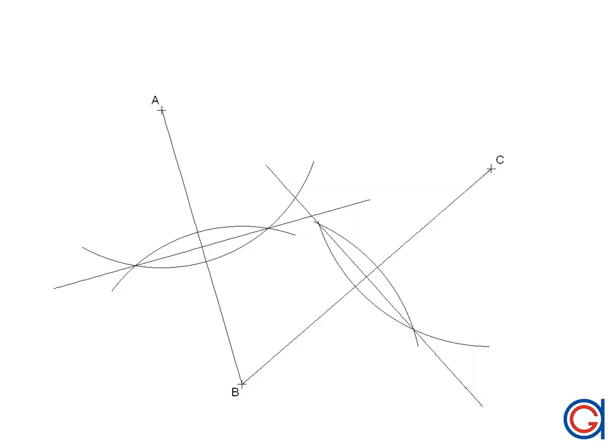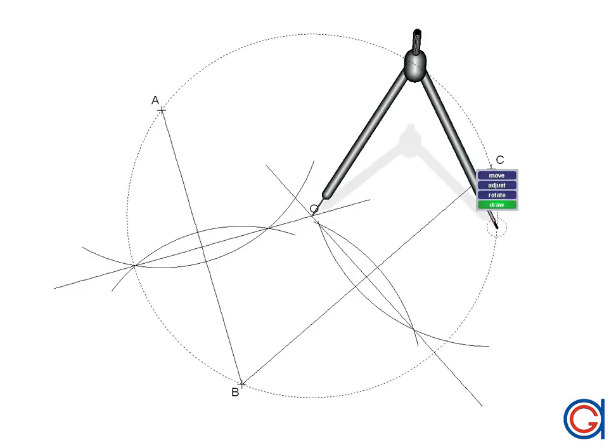So now, where the two perpendicular bisectors intersect, we will name the point O, and this will be the center of our circle that we want to draw.